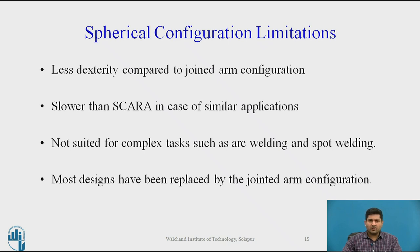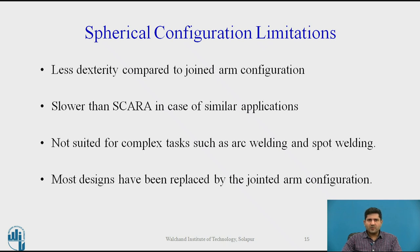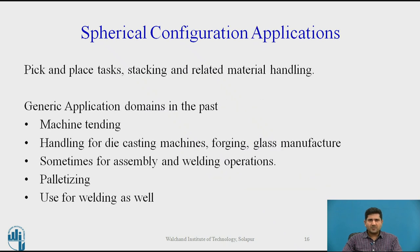These robots were used for welding and spot welding in the past, but the work cell had to be designed around the robot's limitations. Now, modern robots are so flexible that they can weld in places which these older robots cannot. That's one key advantage of the jointed arm configuration. Most designs have been replaced by jointed arm configurations. Generic application domains for the spherical configuration included machine tending, handling for die casting, assembly, palletizing, and welding.